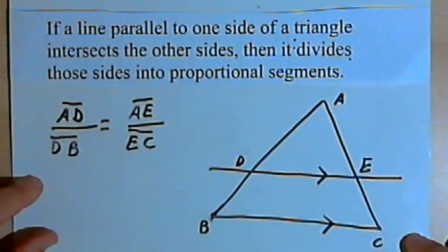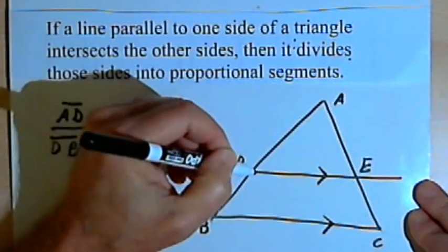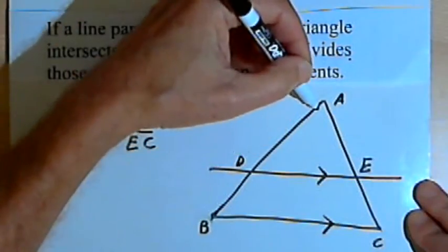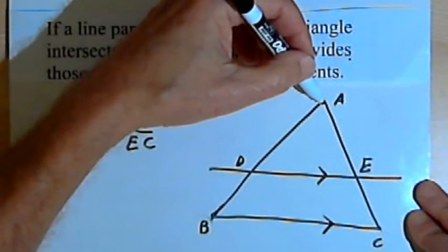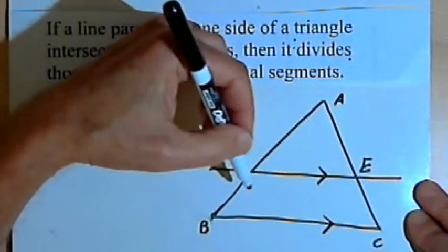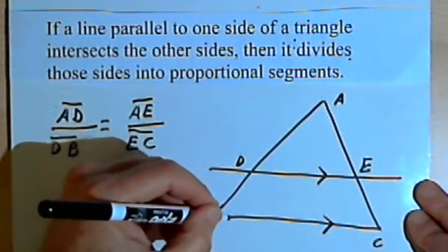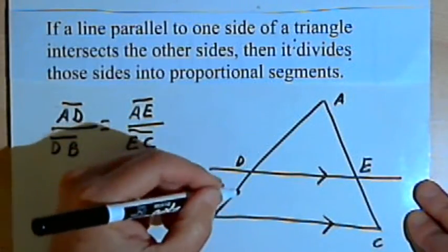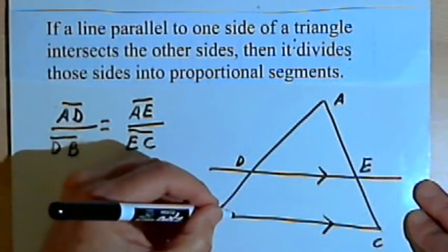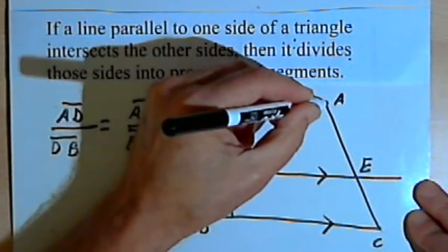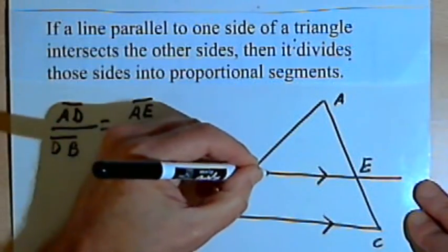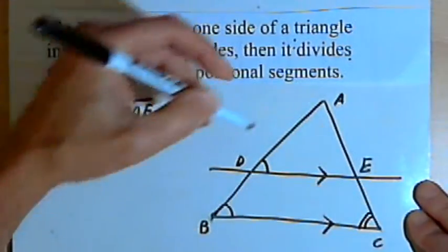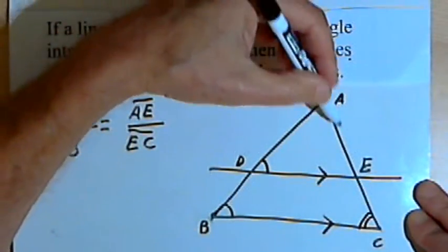Here's how we can prove this. I've got two parallel lines, DE and BC. The two sides of the triangle that DE intersects can be thought of as transversals cut by those two parallel lines. So we know that corresponding angles along each of those transversals would be congruent angles. So angle B would have to be congruent with its corresponding angle ADE, and angle C would be congruent with its corresponding angle AED.